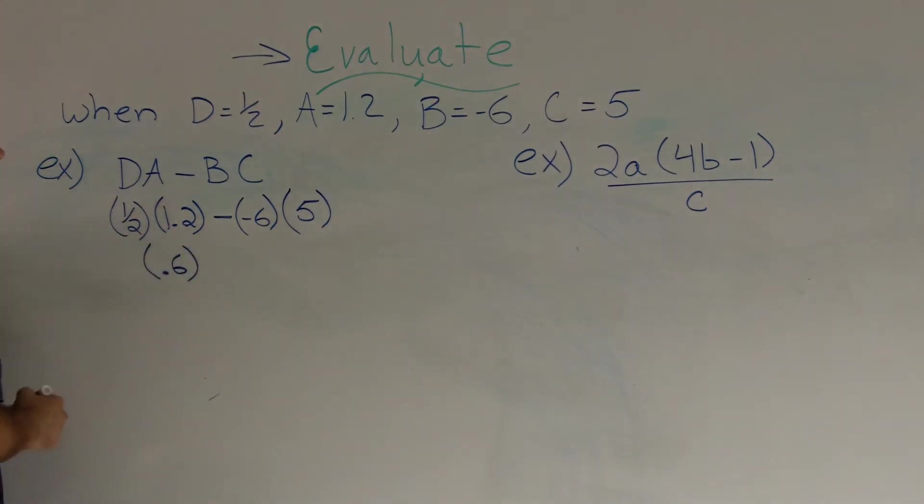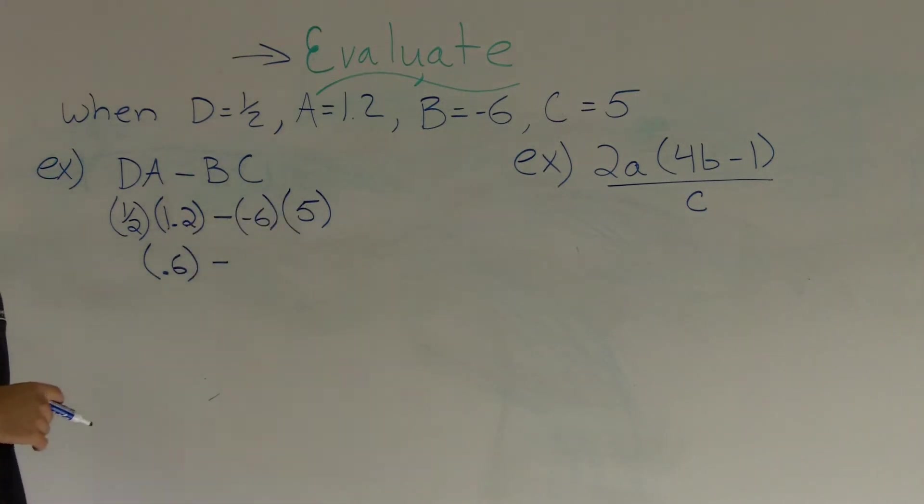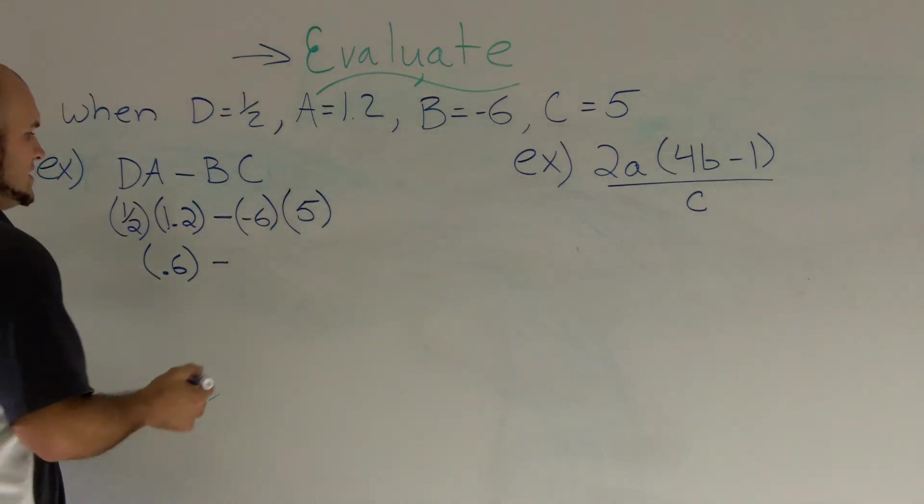We can also transfer it into a fraction. However, we'll notice in this problem it will be pretty easy to keep it in its decimal form. And negative 6 times 5, we know a negative times a positive is always going to be a negative. 6 times 5 is 30, so it's a negative 30.